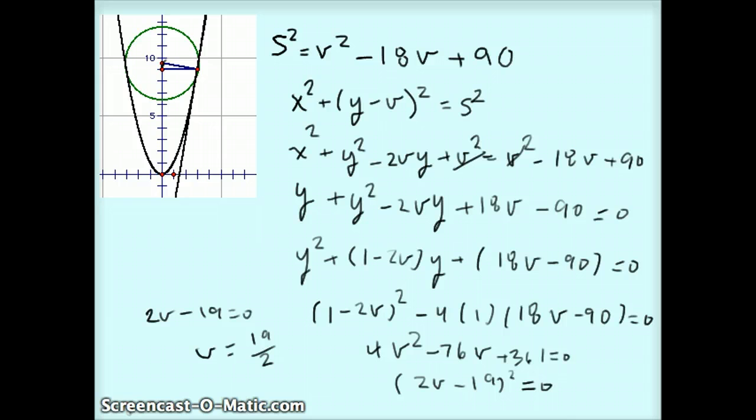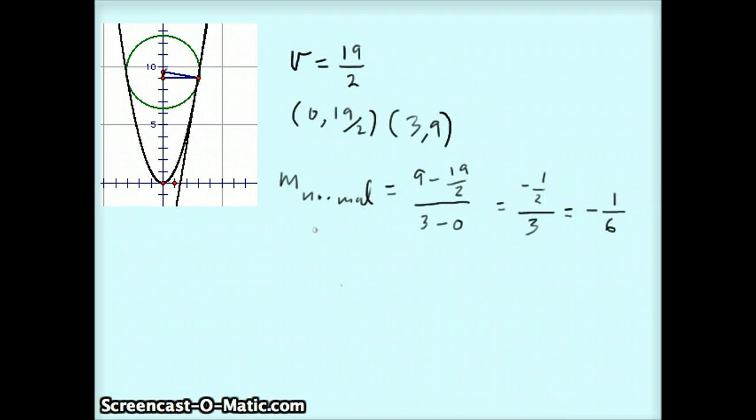And now I've located the actual height of that point. Well, if that's the height of the point, then I can use that to work out the slope of the normal line, and then the slope of the tangent. So the slope of the normal line is the slope between 0, 19 over 2 and 3, 9. And right here, I've worked out the slope of the normal line ended up being negative 1, 6. That means the slope of the tangent, which is the negative reciprocal, would be just 6. And that's the answer to the question.